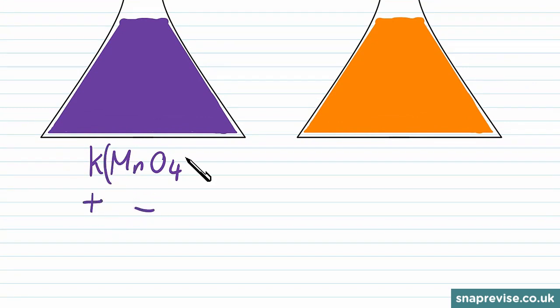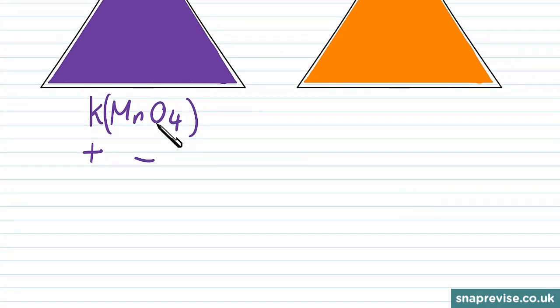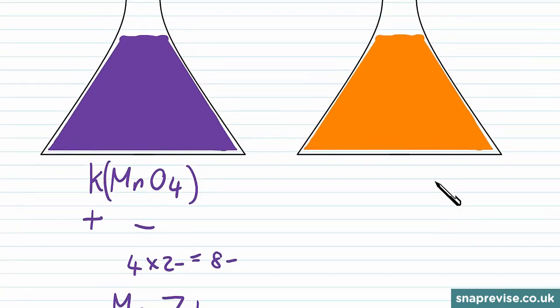Oxygen has an oxidation number of 2- per oxygen, so we have 4 lots of 2- for the oxygens, which gives us 8-. The manganese must counteract some of this 8- to give an overall charge and oxidation number of the manganate ion of 1-. So the manganese must be 7+, which we saw earlier in our table.